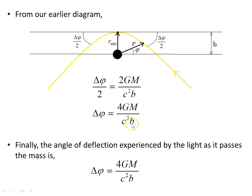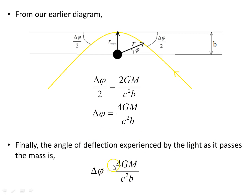To conclude: the deflection angle experienced by light passing the mass is Δφ = 4GM/(c²B) for small deflections. For large deflections — such as those shown in the exaggerated diagram — you need to consult the original Schwarzschild Geodesics #5 video, which provides the approach for large deflection angles in its final pages.